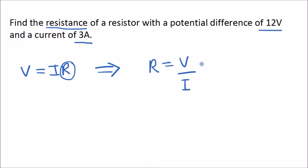If we stick in the numbers, that's 12 volts divided by 3 amps, which gives us 4 ohms. So that resistor has a resistance of 4 ohms.